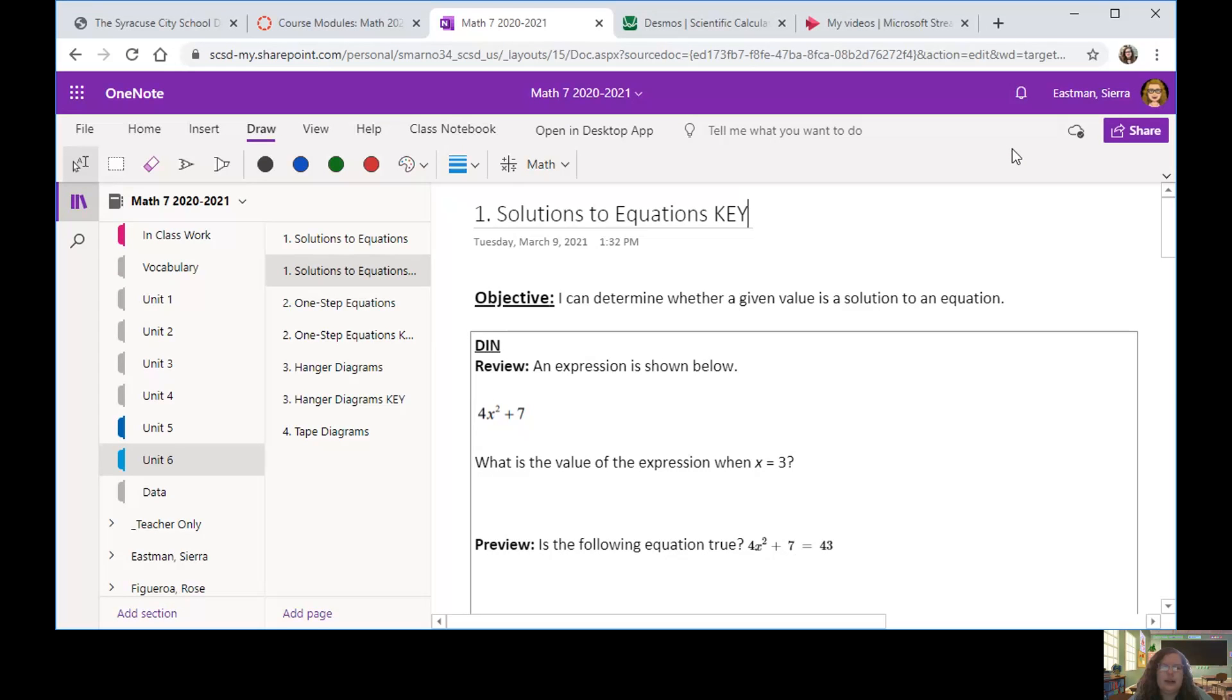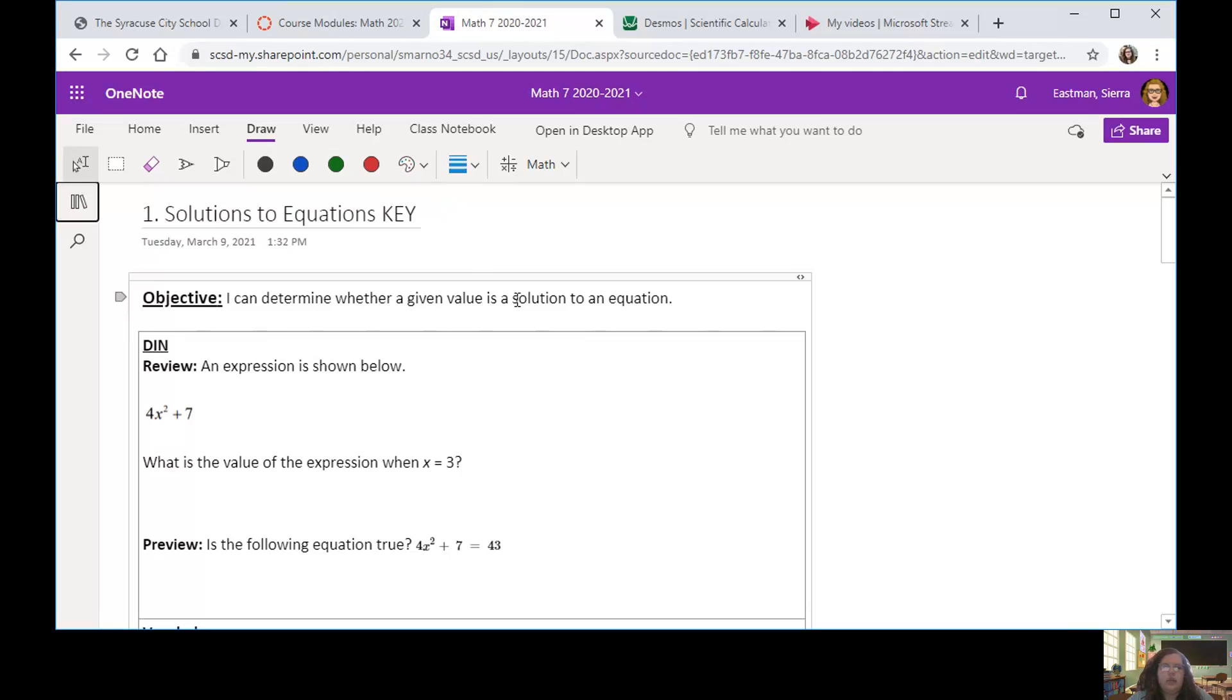Good morning, everyone. Today we're going to be starting Unit 6. You're going to go to the new Unit 6 folder in your class notebook and click on page one, Solutions to Equations. Once we get there, we can see our objective for today, which is to determine whether a given value is a solution to an equation.